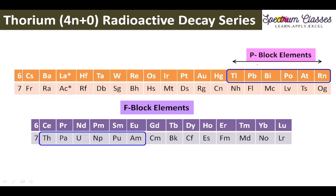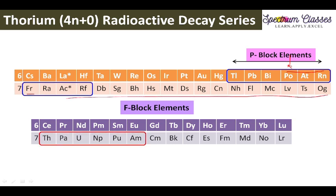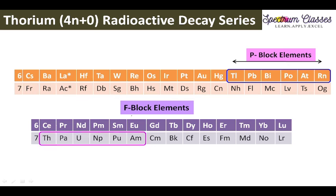One more thing to bring to your notice: from polonium onwards we have radioactive elements. So you might consider polonium, astatine, radon, francium, and this whole period. You might be thinking this lanthanide series is also radioactive — no, it is not radioactive. This period is radioactive because it is in the sixth period; the lanthanide series is separate, so you can easily recognize the same thing.